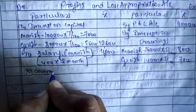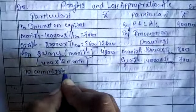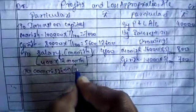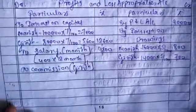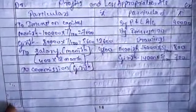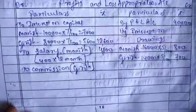Next is commission — Girish's commission. To calculate the commission we need a working note, because here the commission is calculated after charging Manish's salary. That's why we need to make a working note.